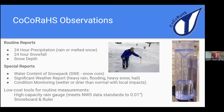Some of the observations available from CoCoRaHS observers include 24-hour precipitation, snowfall, and current snow depth. Most observers take observations around 7 a.m. each morning. There are also special reports: snow cores are especially valuable for winter snowpack and snow water equivalent (SWE). Observers can also send in spotter-like reports for heavy rain, flooding, blizzards, hail, or other adverse weather events. There's also the condition monitoring report, which is especially helpful right now because Minnesota is in a drought — people can provide eyewitness reports of local impacts from dry or wet conditions.